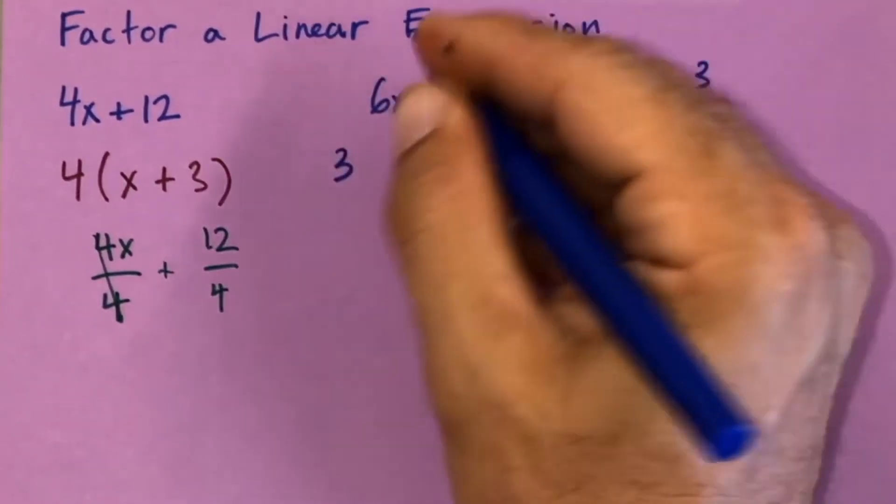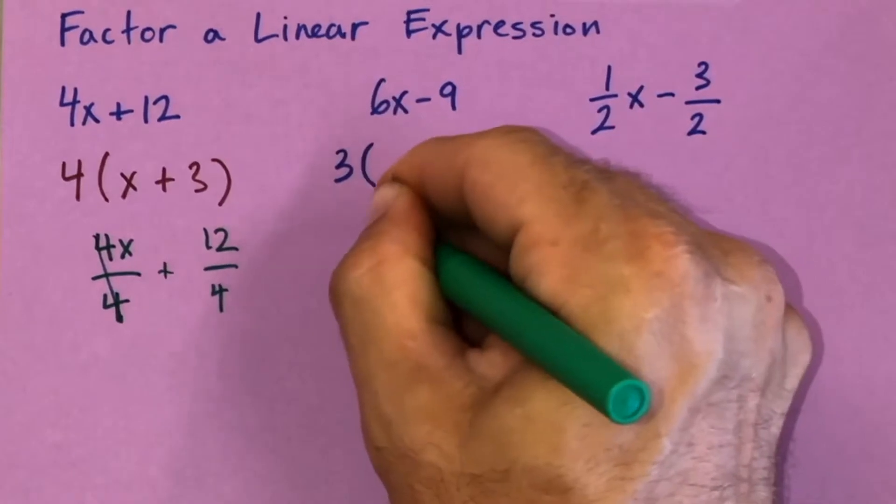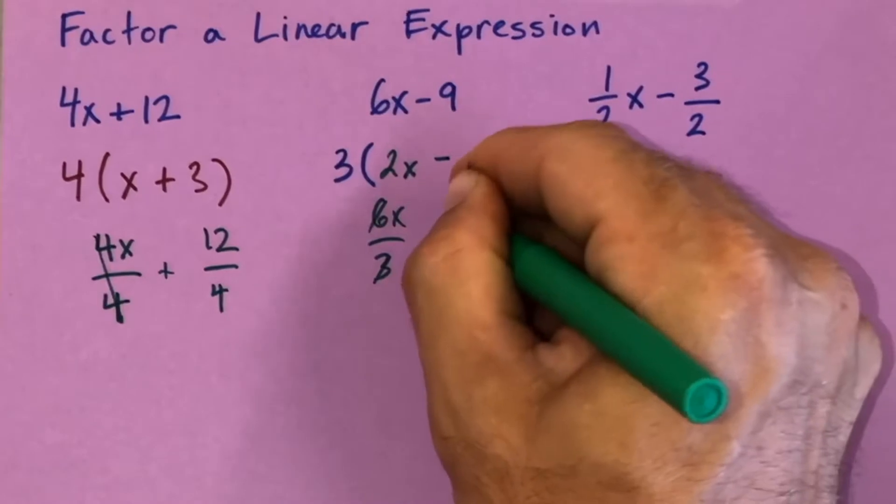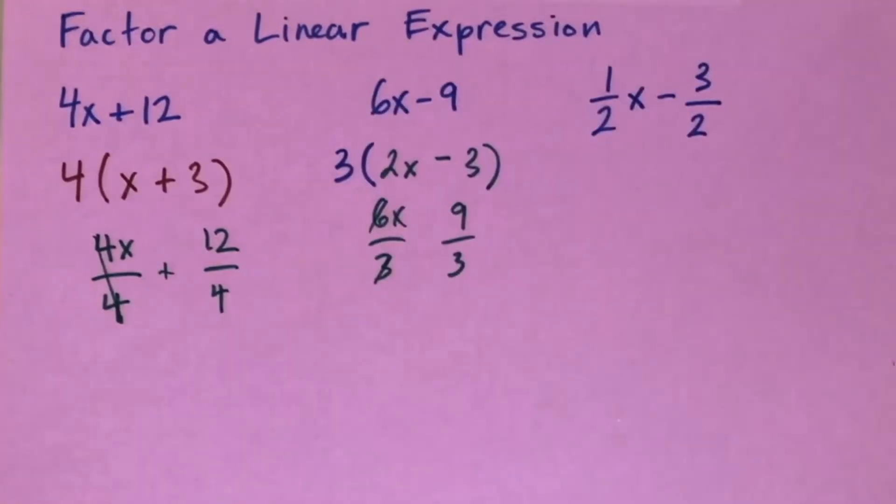So what we're doing here is 6x divided by 3 gives us 2x minus 9 divided by 3, which would give us 3, and this is how we would factor a term such as this.